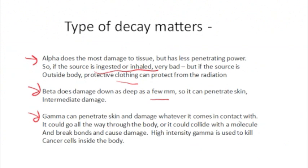Gamma radiation has the greatest penetrating power — so much so that it can go right through your skin and your bones, and it could pass straight through you, or if targeted to a certain part of your body, it can cause serious tissue damage, to the point where it's used to actually kill cancer cells by destroying them.